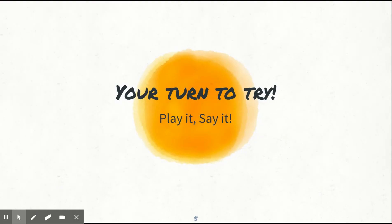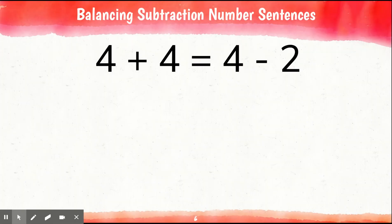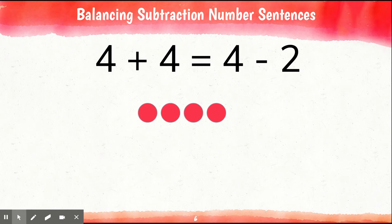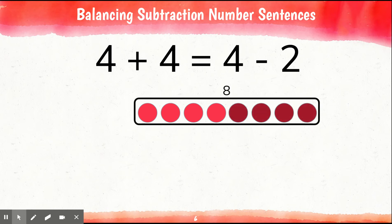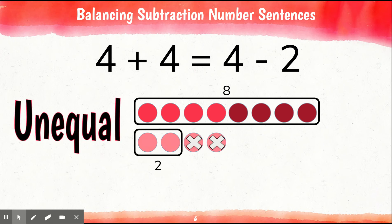Okay, now it's your turn to try it. We have 4 plus 4 is equal to 4 minus 2. Do you think this is equal or unequal? Well, let's see if you're right. Here are 4 red counters plus 4 more — that is 8 in total. Then we have 4 counters and we're going to take away 2. That only leaves us with 2 counters. This is unequal. So if you said unequal, you're correct.